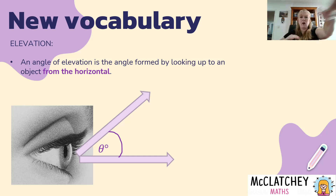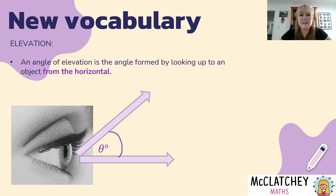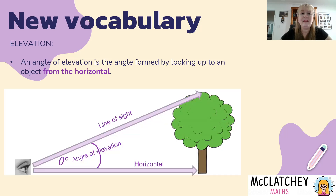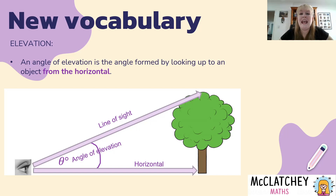This angle of elevation is the angle that is made with the horizontal line and your line of sight — so we've got this horizontal line and then we look upwards towards an object. That could be a bird flying in the sky, the top of a building, or an airplane. In this particular example we've got somebody standing in front of a tree. Their line of sight looks up to the top of the tree from the horizontal — it's always important to remember it's from the horizontal. The angle formed between the horizontal and your line of sight to the top of the object is angle theta, which is our unknown. We call that the angle of elevation.